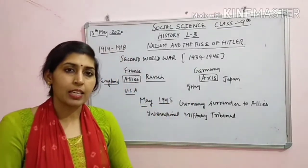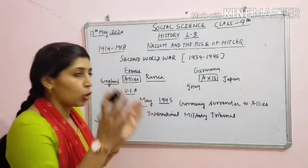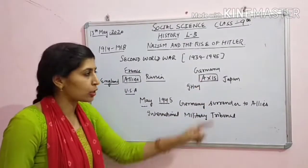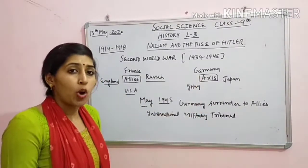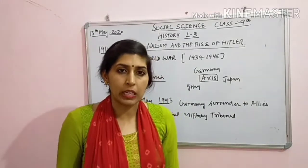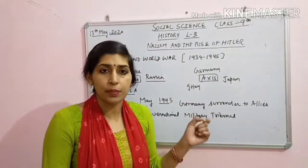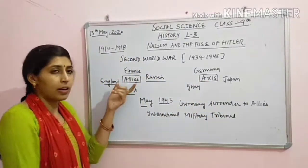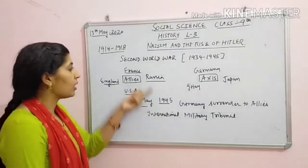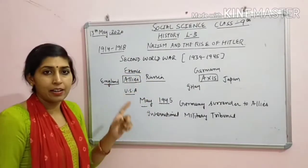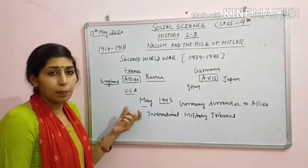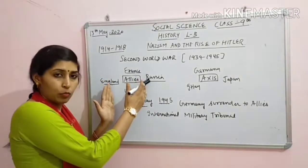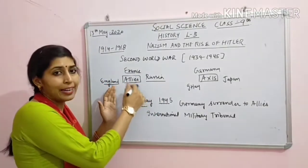Kis Second World War ke time par kya hua tha? Aapko bataya jata hai ki Second World War kis kis ke beech mein hua tha. Doh group the - allies group and axis. Isse central power bhi kaha jata hai. Axis ko central power bhi kaha jata hai. Allies mein kaun aate the? Powerful countries the - France, Russia, USA, England. Yeh developed countries hain. Toh France, Russia, USA and England - they are on one side, that is called the allied or allies group.